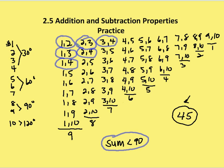Now, of those 45 different possibilities, only 6 of those combinations are going to be angles whose sum is less than 90 degrees: 1 and 2, 1 and 3, 1 and 4, 2 and 3, 2 and 4, and 3 and 4. Everything else is going to be 90 degrees or greater. So of the 45, we have 6 combinations whose sum is less than 90 degrees, which simplifies to 2 over 15.